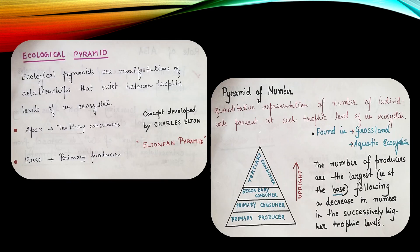Now we'll come to ecological pyramid. Ecological pyramids are manifestations of relationships that exist between the trophic levels of an ecosystem. The base of the pyramid is normally represented by the primary producers and the apex or the apical part is represented by the tertiary consumers. This concept of ecological pyramid was developed by Charles Elton and it is also known as Eltonian pyramids.